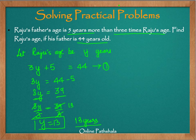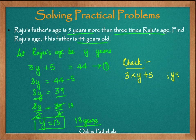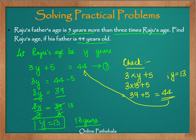Now let us check the solution by substituting Raju's age: 3 into y plus 5, substituting y equals 13, gives us 3 into 13 plus 5, which is 39 plus 5, or 44 — which is nothing but the right hand side. So the left hand side equals the right hand side for y equals 13. Therefore, y equals 13 is a solution of the equation, confirming that the solution we found is correct.